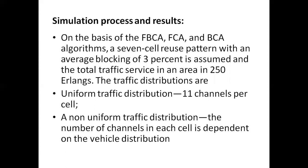On the basis of these algorithms, we are applying them to the seven-cell pattern. We are taking two traffic distributions. The first one is uniform traffic distribution, with 11 channels per cell. Uniform traffic distribution means sometimes we have higher traffic with more mobile users, and at some times less mobile users. The second case is non-uniform traffic distribution, where the number of channels depends on the vehicles or mobile users.